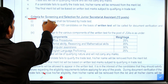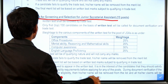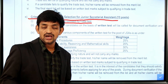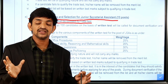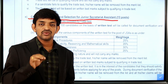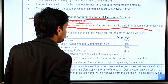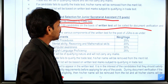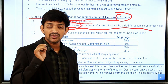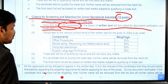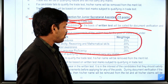The screening and selection criteria for the Junior Secretary Assistant will be clearly mentioned. The selection process involves a written test followed by a trade test. The written test shortlisting will be done in a 1:10 ratio, meaning the top candidates from all 13 posts will be selected for the next stage.